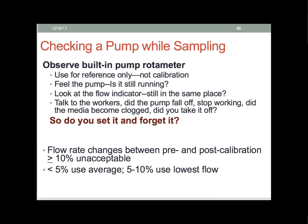While you're sampling, you can use your built-in rotometer to see where the pump is running as a reference point. You can feel the pump to make sure it's still running, and talk to your workers — if it became fouled, they can tell you. We need to do our pre and post calibration. If the difference between the pre and post is greater than 10%, it's considered unacceptable — throw it out or use the lowest flow. If it's between 5 and 10%, AIHA says use the lowest flow. If it's less than 5%, we can use the average.